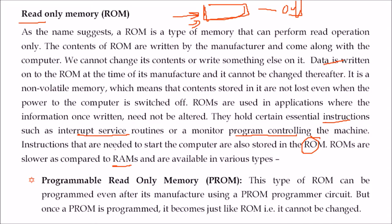There are variations of ROM. First is PROM — Programmable Read Only Memory. This ROM can be programmed even after the manufacturer gives it to you using a PROM programmer circuit, but once programmed it becomes like ROM and you cannot change it again.